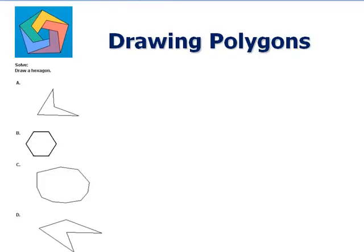Solve. Draw a hexagon. Now, a hexagon is any polygon which has six sides. So, let us count the number of sides in each figure.